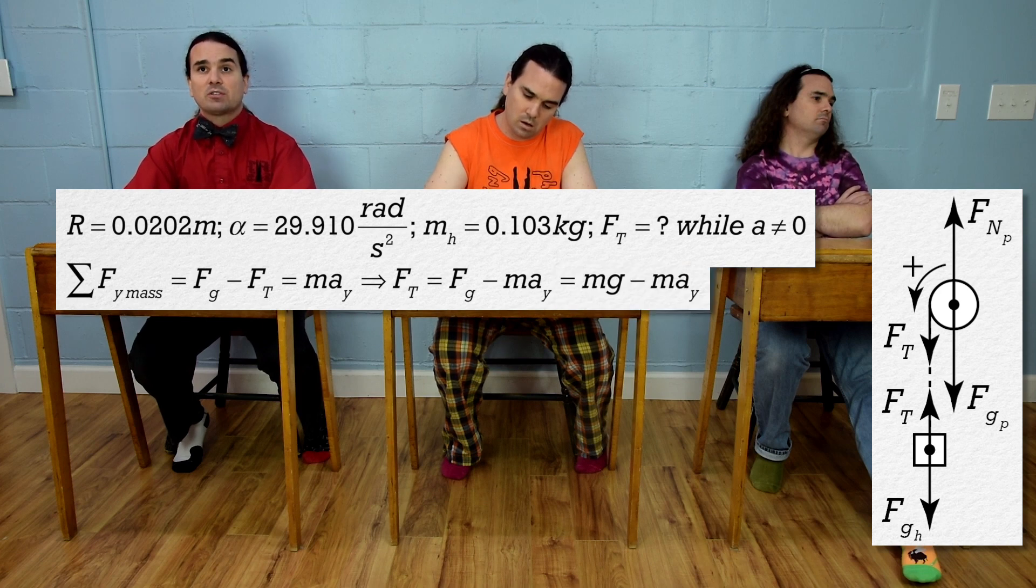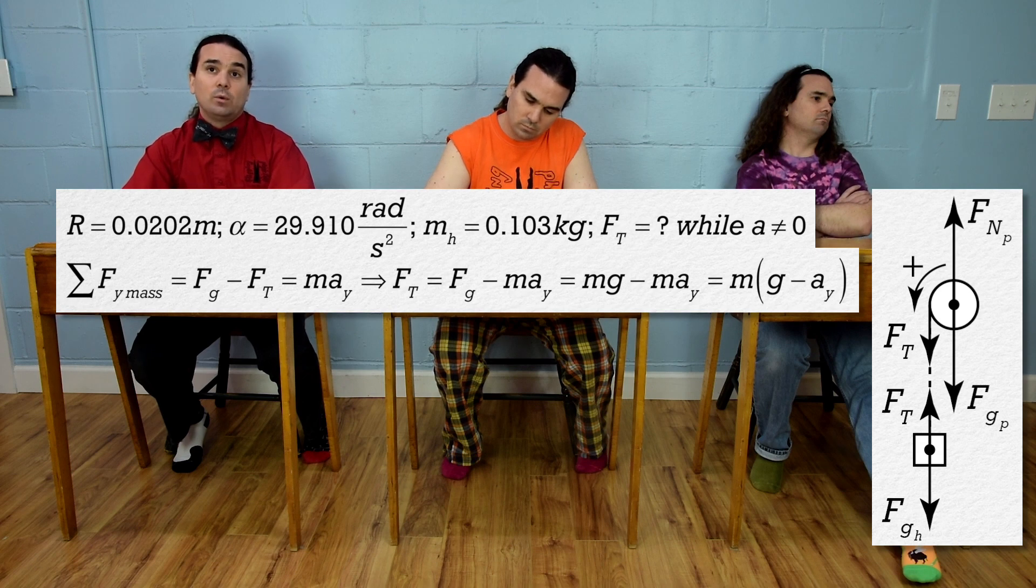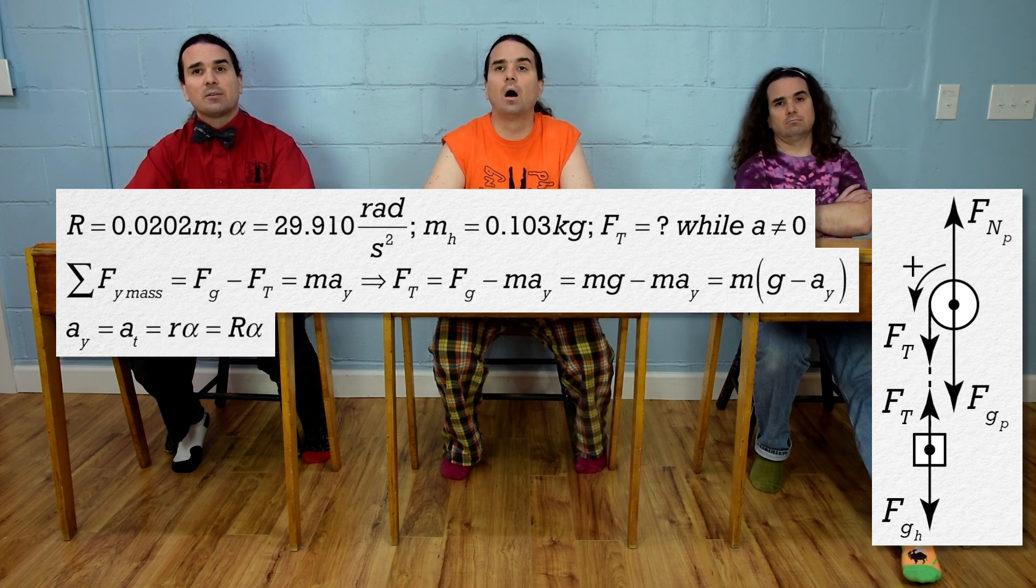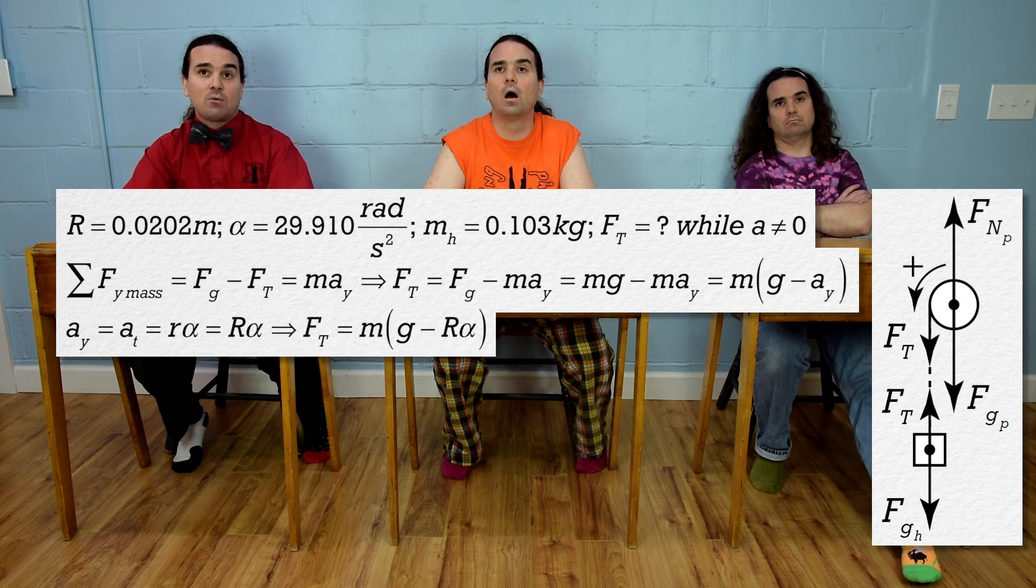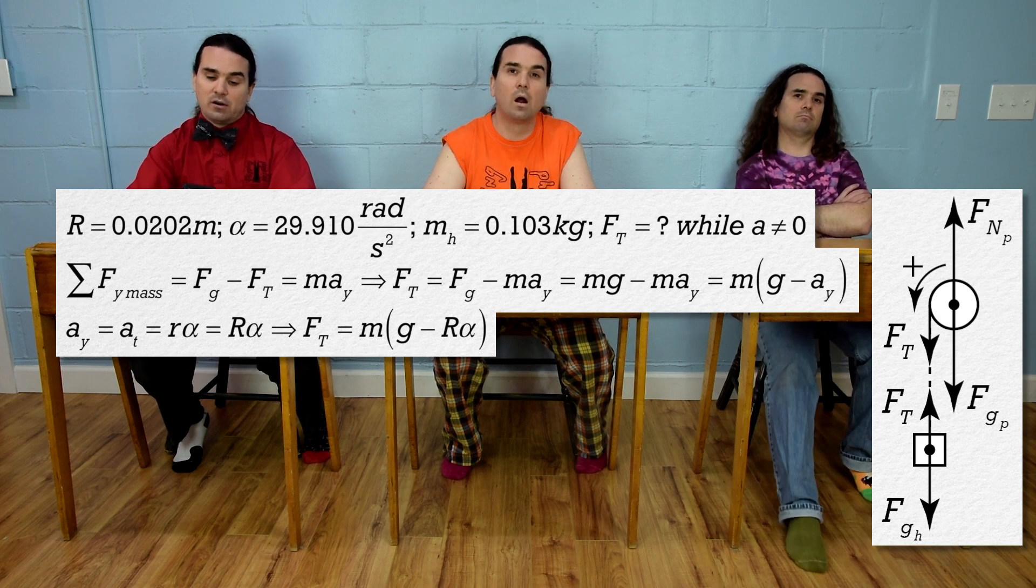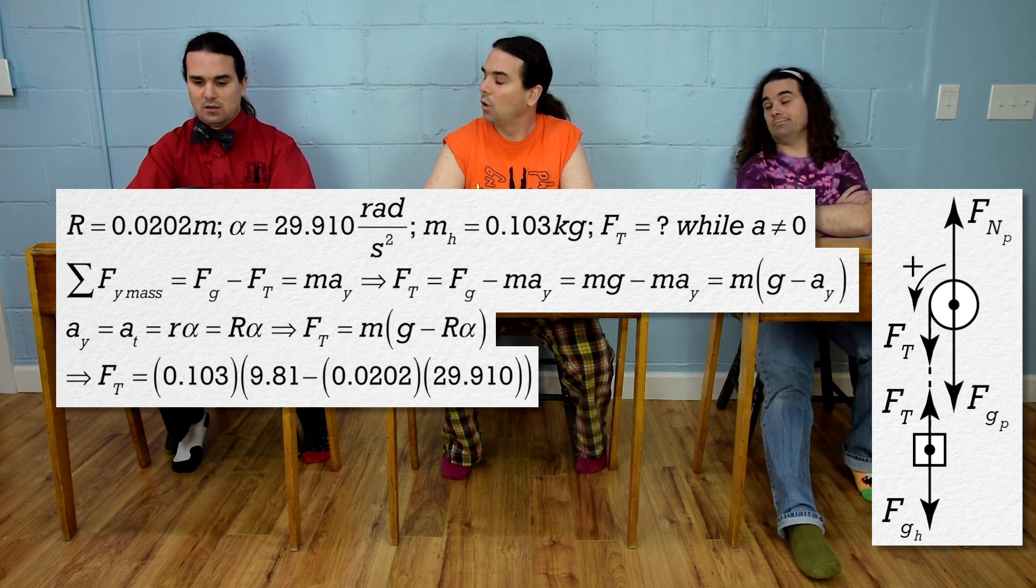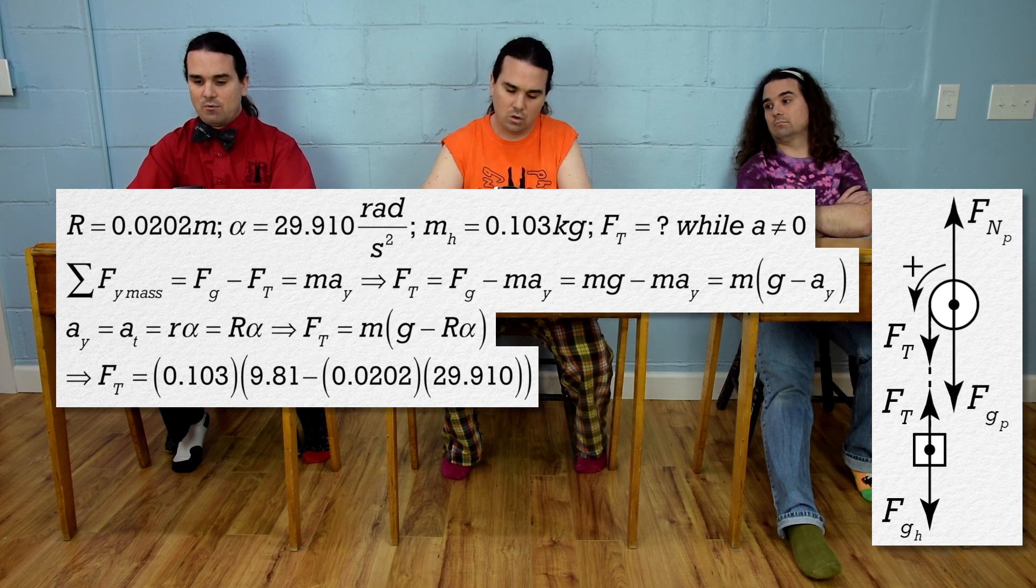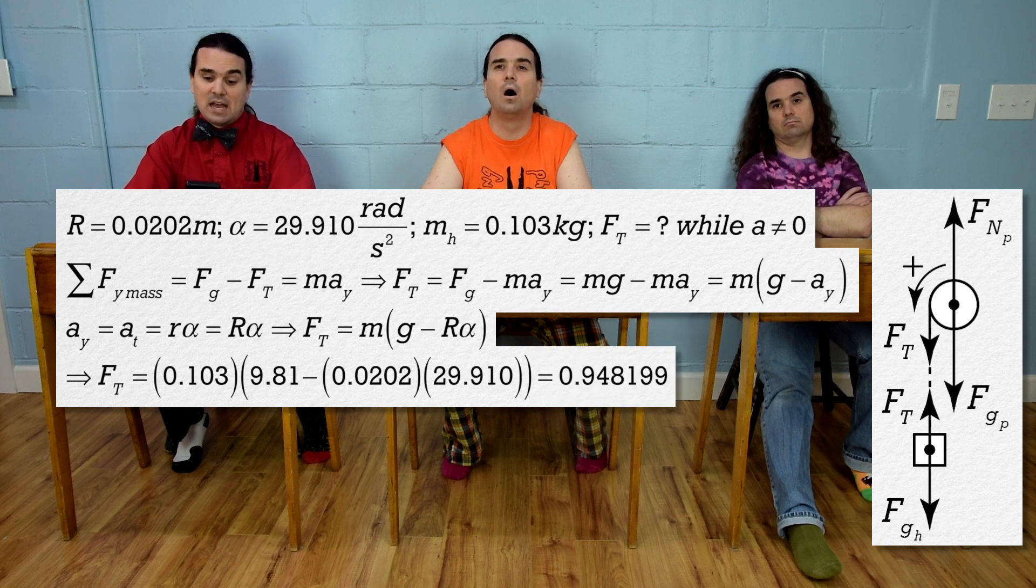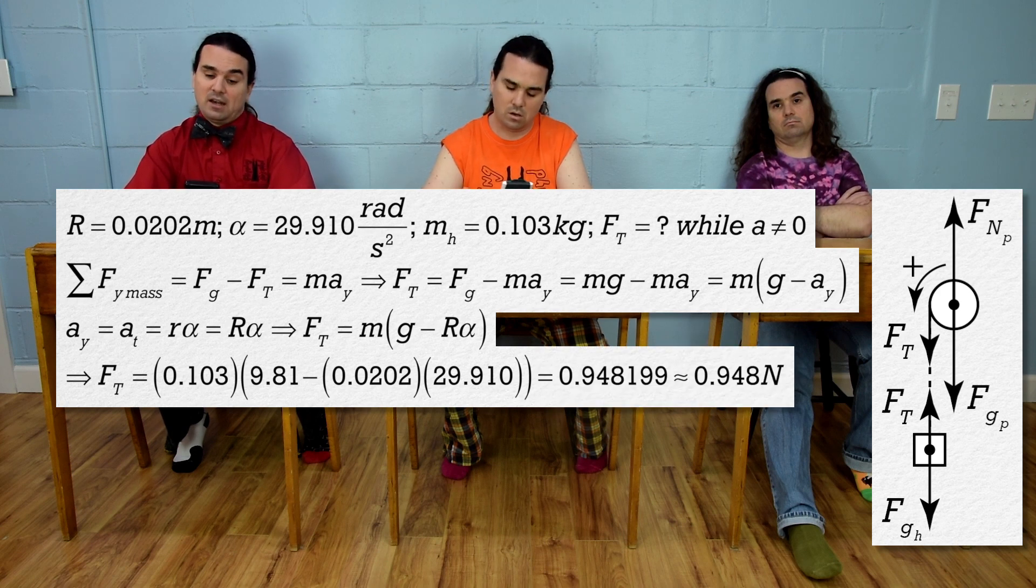We can substitute in the equation for force of gravity and factor out mass. We know the acceleration in the y-direction of the hanging mass is the same as the tangential acceleration of the rim of the pulley, which equals the radius of the pulley times angular acceleration. So, the force of tension equals mass times the quantity acceleration due to gravity minus the radius of the pulley times angular acceleration, or 0.103 times the quantity 9.81 minus 0.0202 times 29.910, which is 0.948199 or 0.948 newtons.